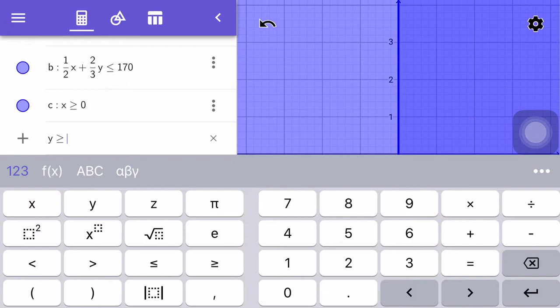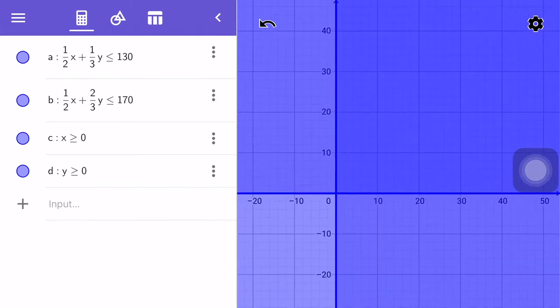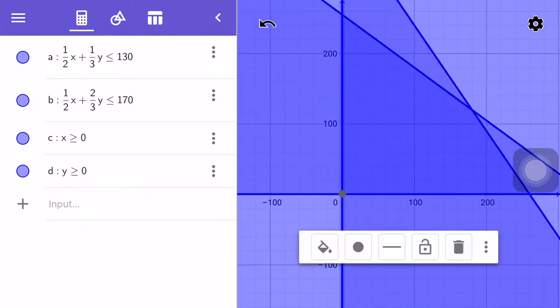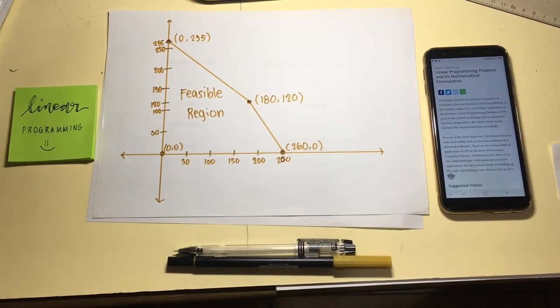After entering all the linear inequalities we did earlier, here is the overall look of the graph. To clearly understand it, I drew it with the corresponding points that we will use on the fifth and final step.